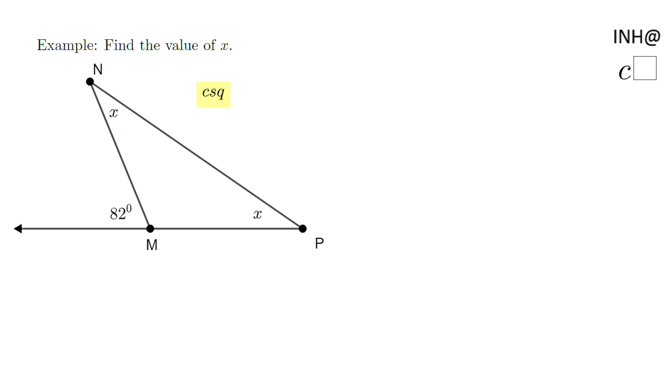Welcome or welcome back to Tiny Help at C Squared. In this example we need to find the value of x. You notice we have x's on both sides here. These two x's represent the measure of angle N and the measure of angle P.